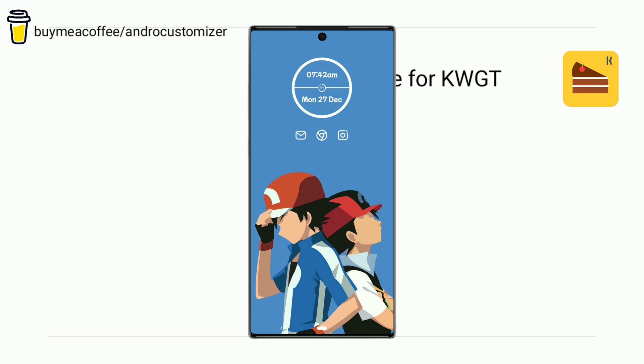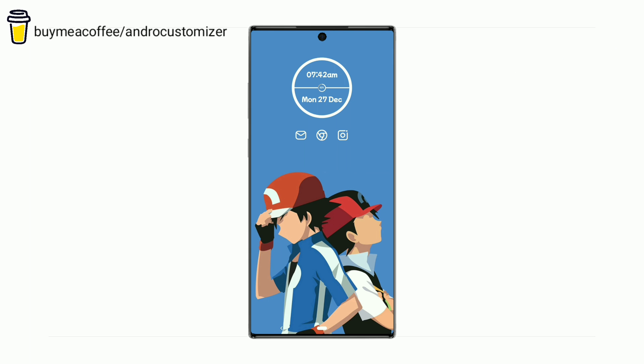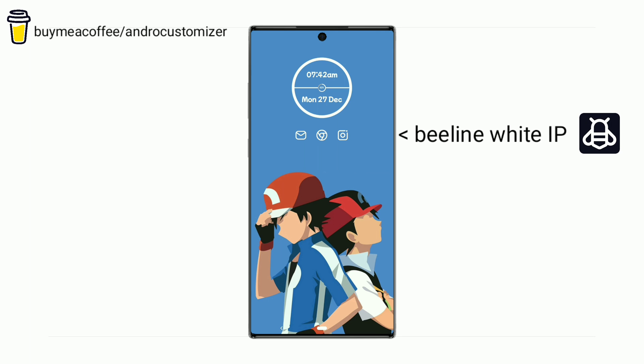This widget shows time, day, date, and battery percentage along with progress. I used the Beeline white icon pack here.